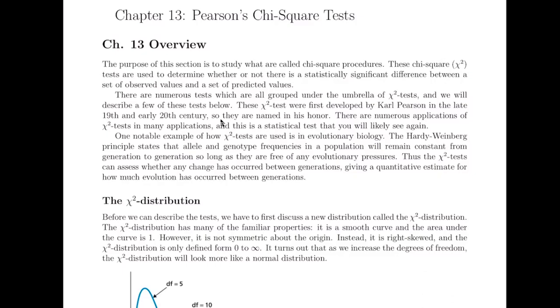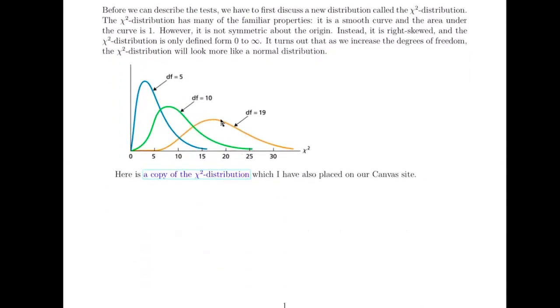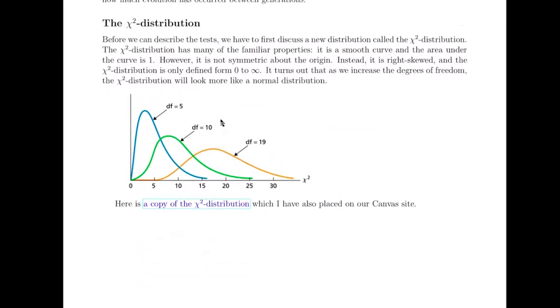They're going to use a new type of distribution. So this is a probability distribution called the chi-squared distribution. There's not a table for this on the handout on Canvas. So what I did is I put a new table there. It's kind of a new link for us in Canvas. And I put a link here in the file as well. So there's a copy of the chi-squared distribution.